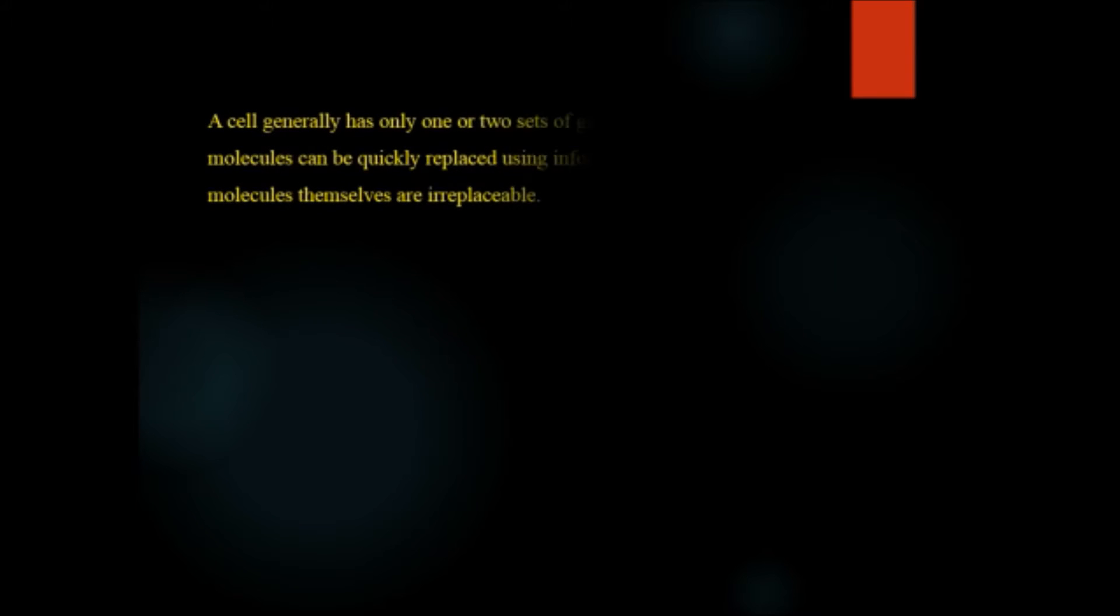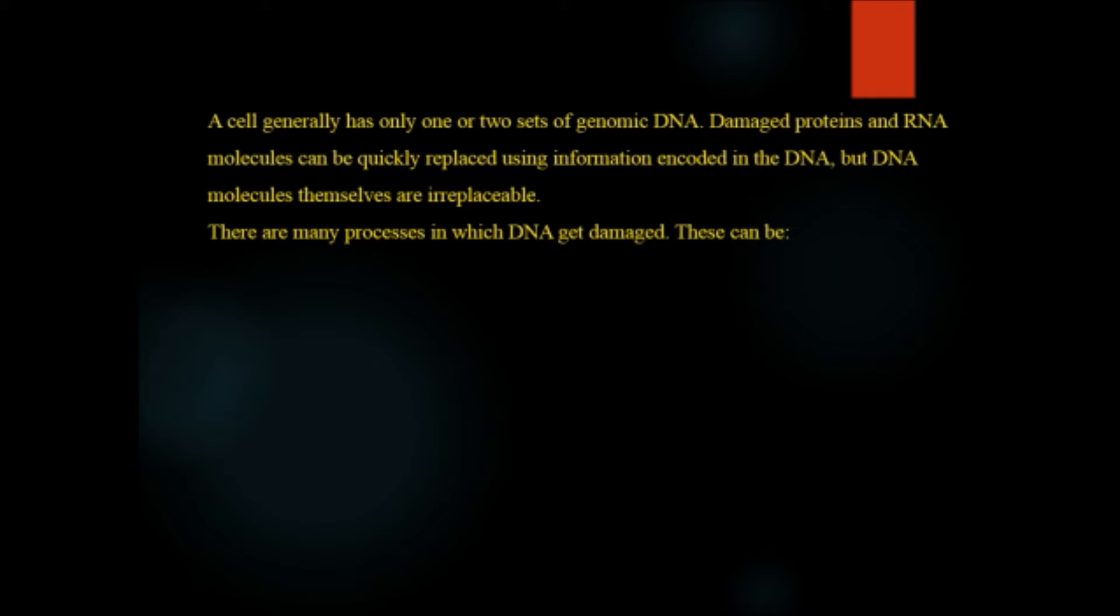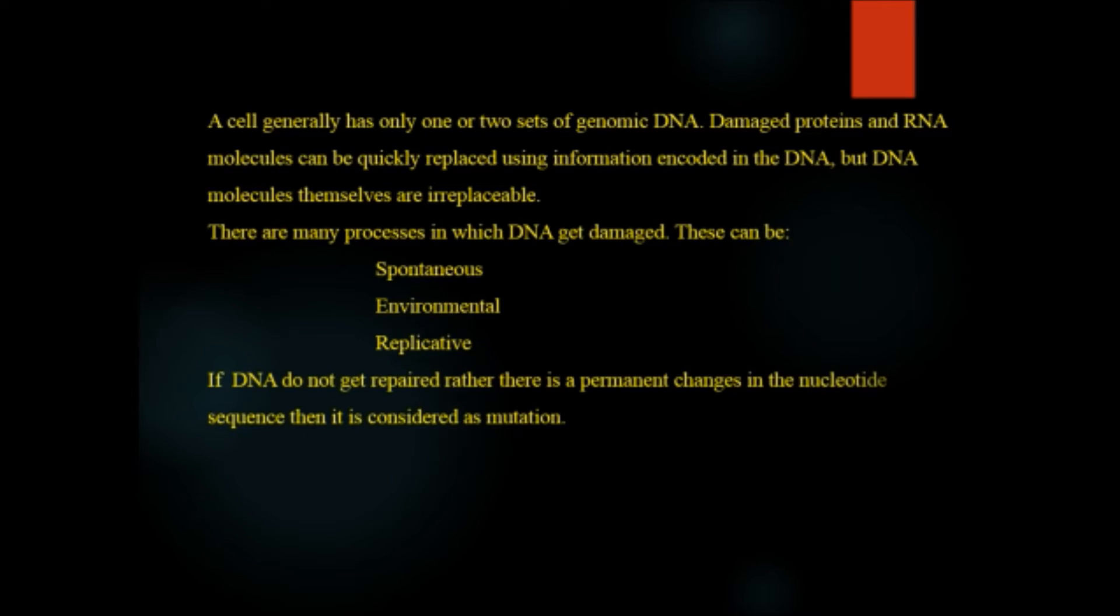A cell generally has only one or two sets of genomic DNA. Damaged proteins and RNA molecules can be quickly replaced using information encoded in the DNA, but DNA molecules themselves are irreplaceable. There are many processes in which DNA gets damaged - this can be spontaneous, environmental, and replicative. If DNA does not get repaired and there are permanent changes in the nucleotide sequence, then it is considered mutation. Mutation can be silent but rarely confers some biological advantage.